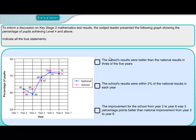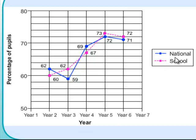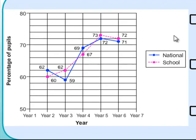Question 20. We have a line chart showing the percentage of pupils achieving level 4 and above. Statement one: the school's results were better than the national results in three of the five years. The school's results are in pink with a dotted line; the national results are a blue bold line. In year six the school did better — that's one. In the next year the school did better — that's two. In the following year the school didn't do better. Then it did do better — three. And in the last year it was lower. So three of the five years — statement is true.